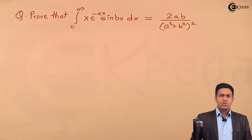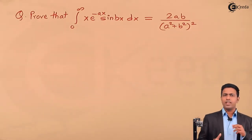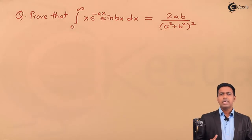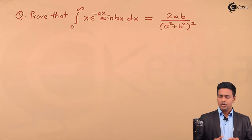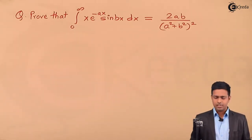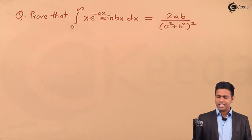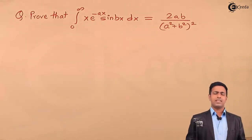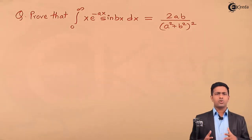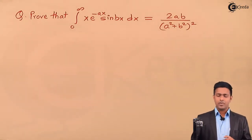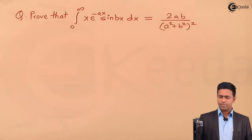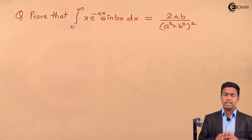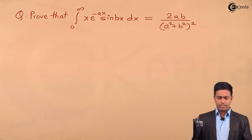Here we are going to solve a numerical which is based on the gamma function. I'll be using the definition of the gamma function to get the value of this integration. We have the integration from 0 to infinity of x e raised to minus ax times sin(bx) dx. We can solve this by usual methods, but using the gamma function we can get the answer in a minimum number of steps.